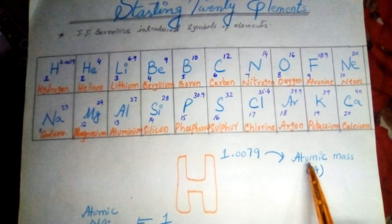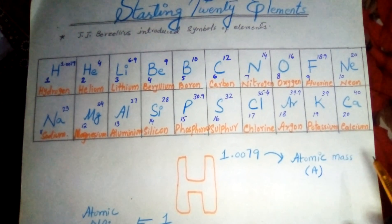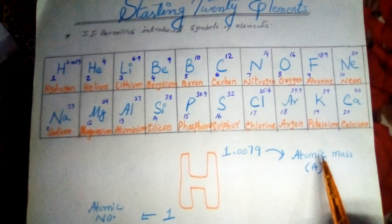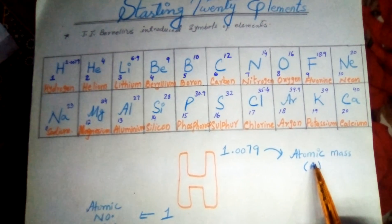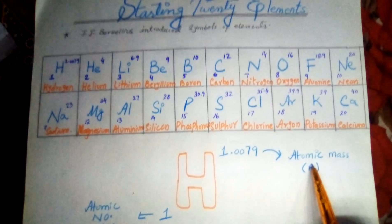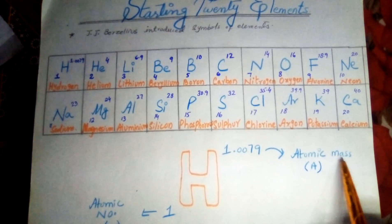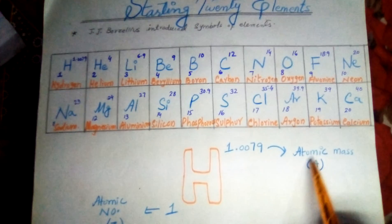Atomic mass — the definition of atomic mass is: the number of protons plus the number of neutrons is called the atomic mass, represented as A.